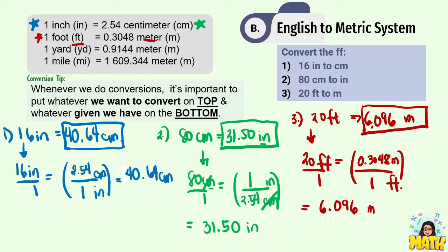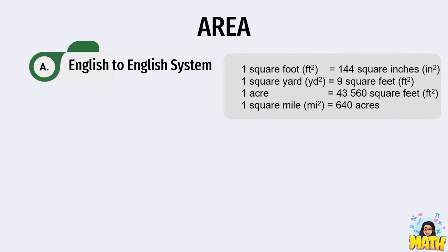When converting length, check carefully which two units need to be converted — whether it is English to English or English to metric. Now let's proceed to area. We follow the same approach, but remember that for area, units are in square units. For example, 1 square foot equals 144 square inches because 1 foot equals 12 inches, and since these are square units, it means 12 times 12 equals 144 square inches.